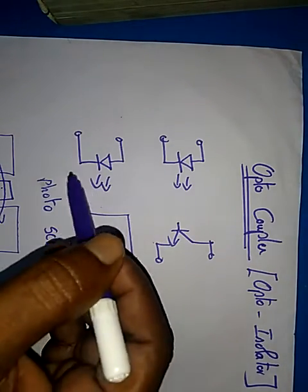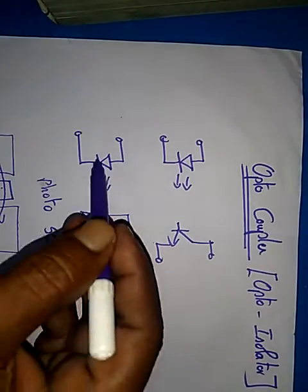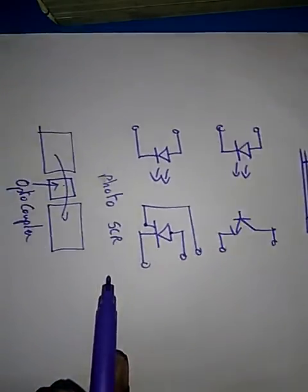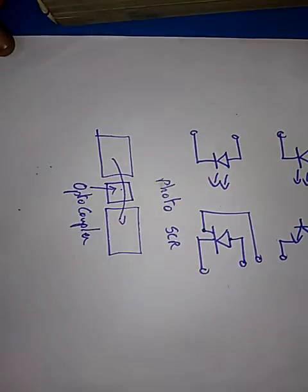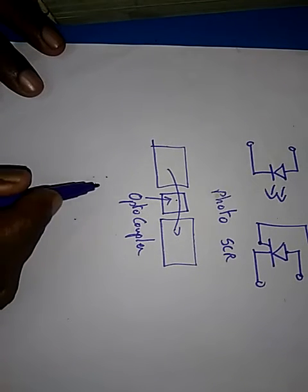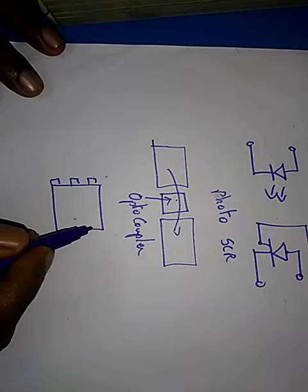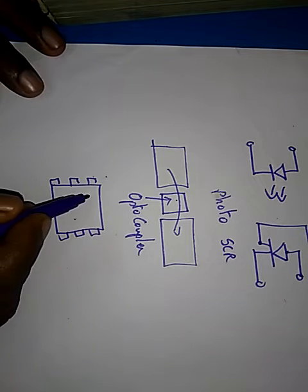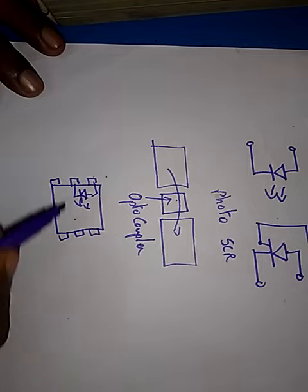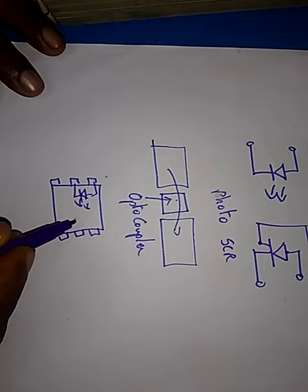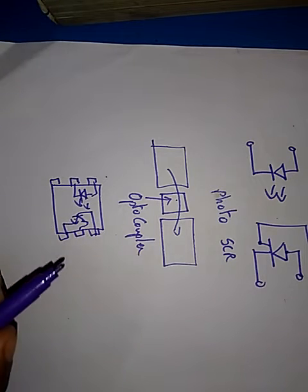For high power we go for triac. This comes in the form of an IC (integrated circuit). Generally it will have three terminals - the first two terminals will be allocated for the LED, and the other three terminals may be allocated to the transistor or SCR.